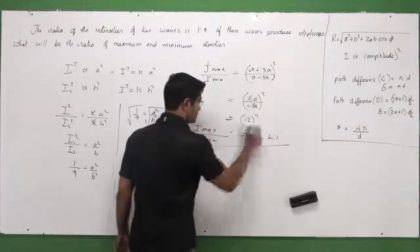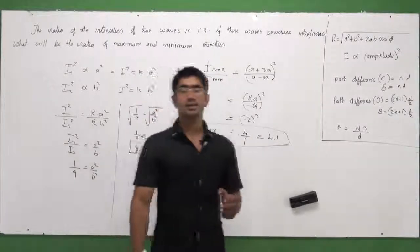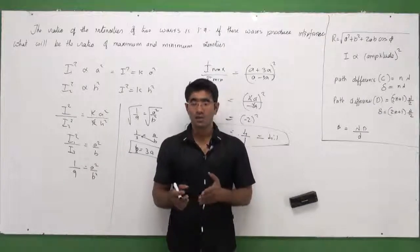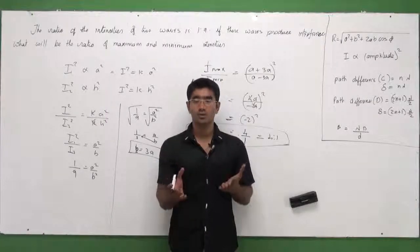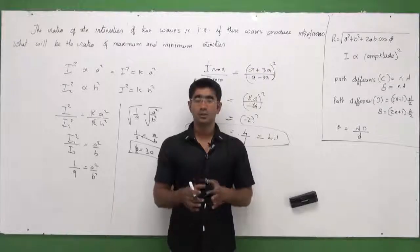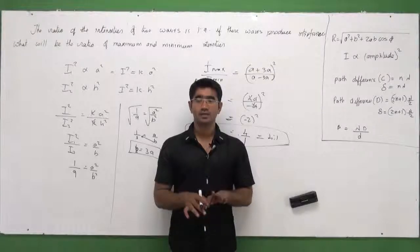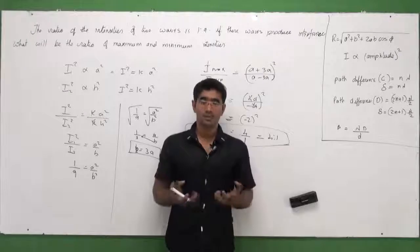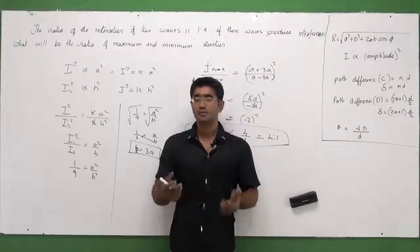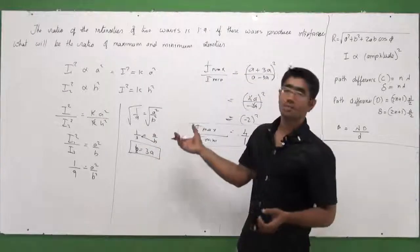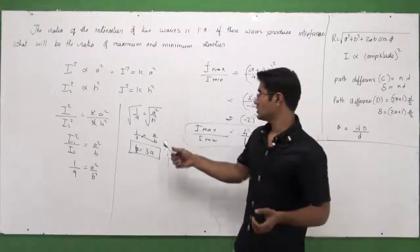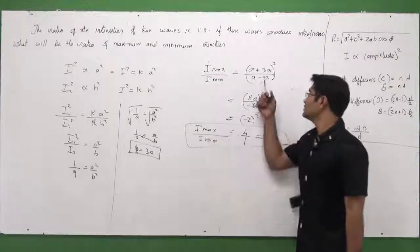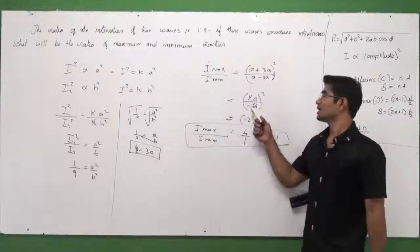Try to understand what exactly the question asks and see how you can connect it to the basic knowledge and formula knowledge you have about this chapter. Numericals are very easy — you should know what the question is asking, how you can connect the concepts, and use mathematical tricks to find the relation between a and b so that you can cancel them out to get a clean numerical answer.